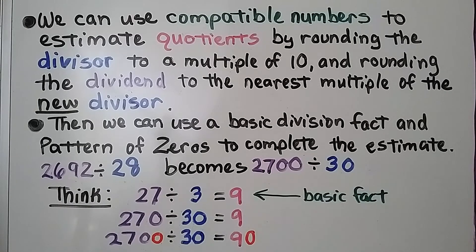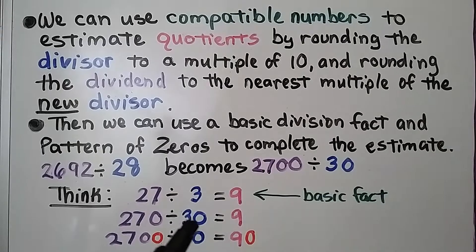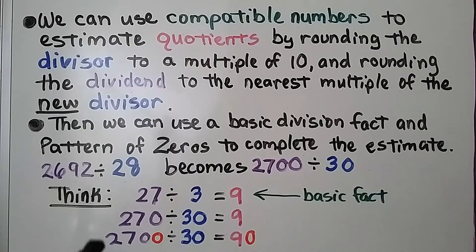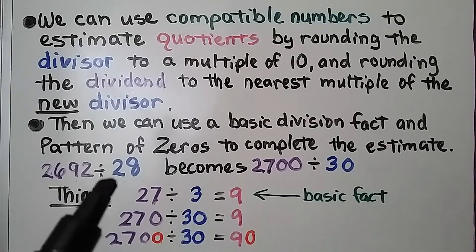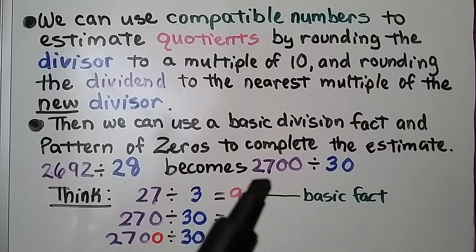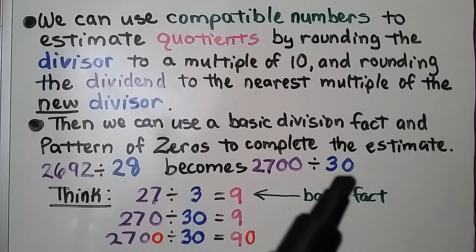We can use compatible numbers to estimate quotients by rounding the divisor to a multiple of 10 and rounding the dividend to the nearest multiple of the new divisor. Then we can use a basic division fact and pattern of zeros to complete the estimate. For example, 2,692 divided by 28 becomes 2,700 divided by 30.